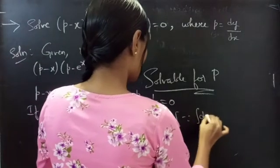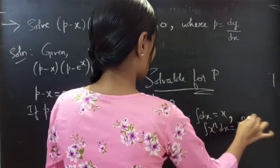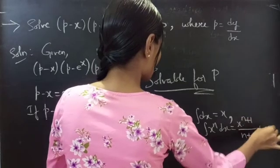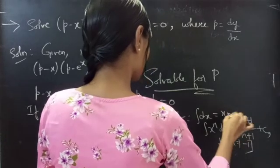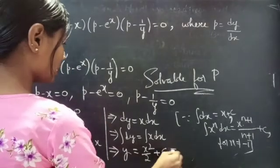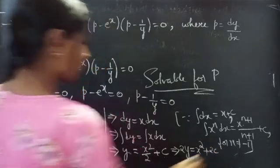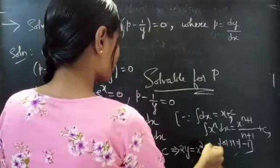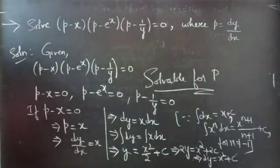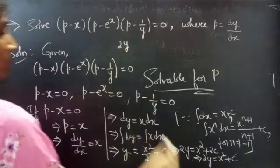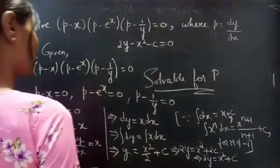By integrating on both sides, we get y equals to x squared by 2 plus C, since integral of x power n dx equals to x power n plus 1 by n plus 1 plus C for n not equals to minus 1. We can also write this as 2y equals to x squared plus 2C. Since C is an arbitrary constant, 2C can be written as C. So 2y minus x squared minus C equals to 0.